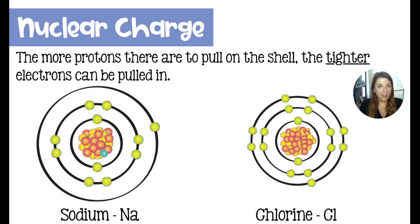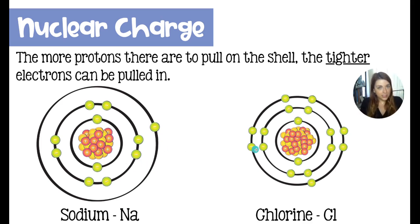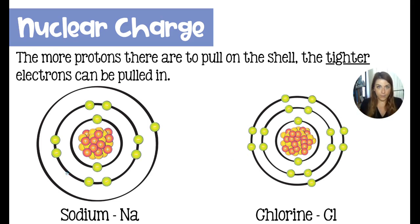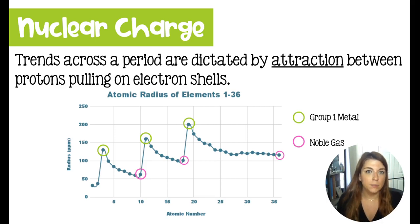When comparing elements in the same period with the same number of principal energy levels, we can compare the nuclear charge to determine where they stand. Sodium has 11 protons and three energy levels; chlorine has 17 protons and three energy levels. Chlorine has more strength and is able to pull the electron shells in tighter. Although chlorine has more repulsive forces due to more electrons, it net has more attractive forces, pulling in the radius much more tightly.